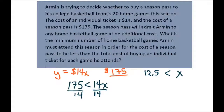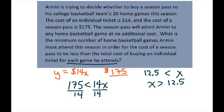X is how many games he needs to attend. He can't attend 12.5 games, so X has to be greater than 12.5, and you have to round up. So it has to equal 13 games.